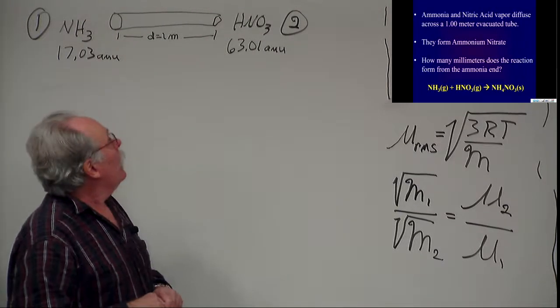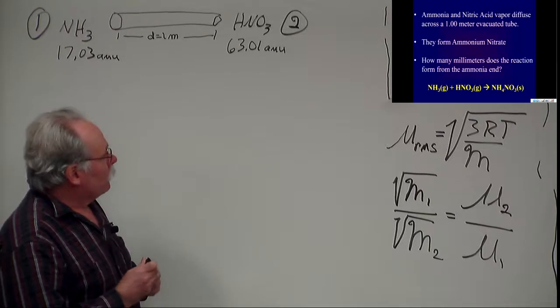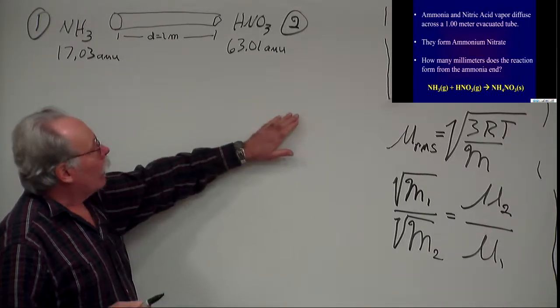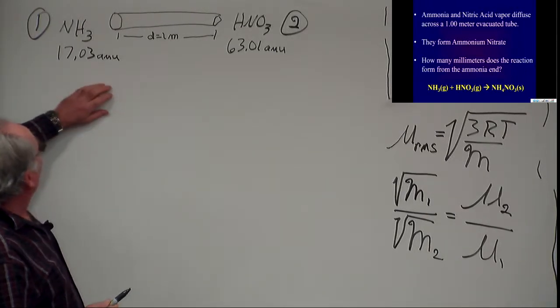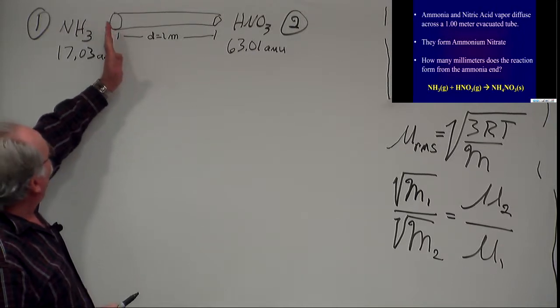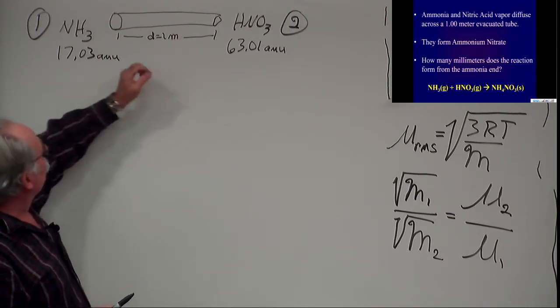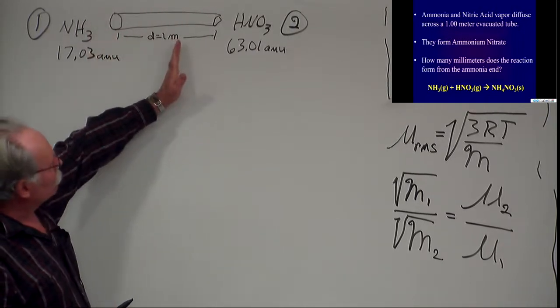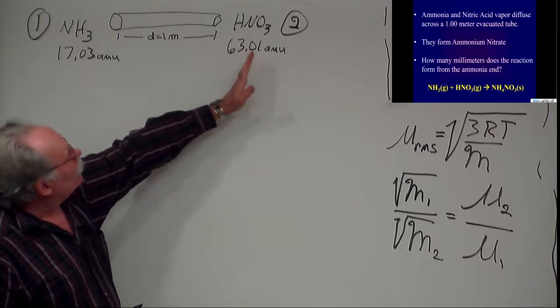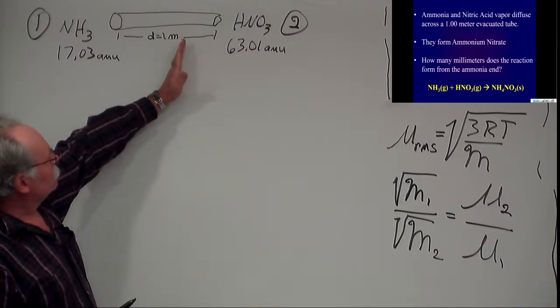Greetings. In this problem, we're going to use Graham's Law to identify how far down a one meter tube ammonia gas travels when at the other end nitric acid gas is traveling.